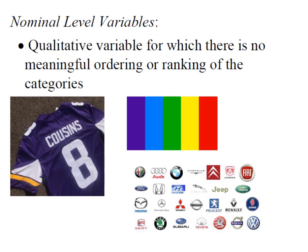When we have a nominal level variable, there's no meaningful order or ranking of the categories. This could be jersey numbers for football players, colors, or makes and brands of automobiles. The key point is that we have these categories, but there's no logical order or rank for those categories that makes any more sense than the next.